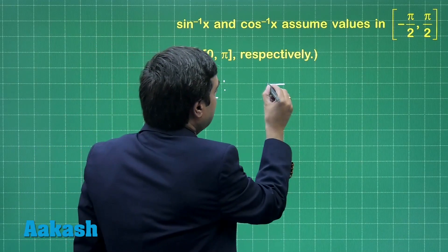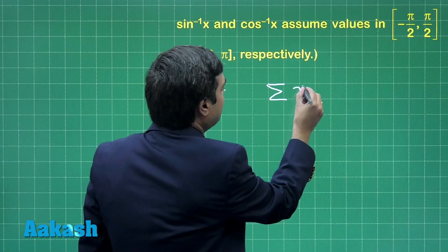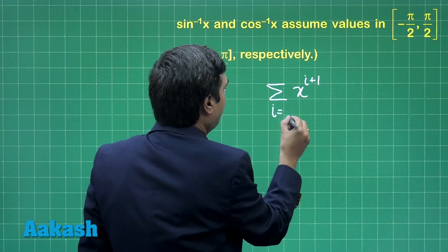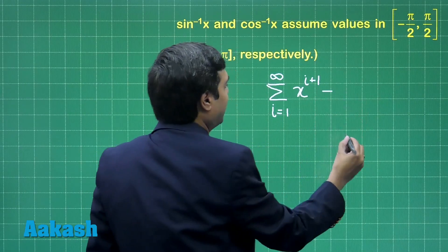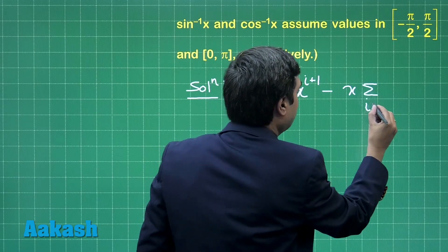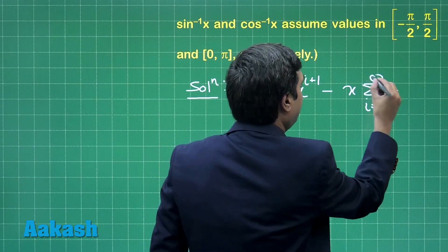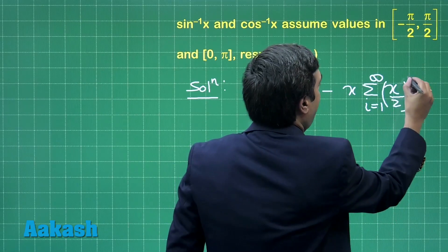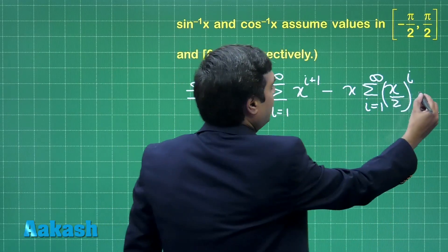Let us start this one. We have to equate summation x to the power i plus 1 where i is from 1 to infinity, minus summation i equals 1 to infinity x by 2 to the power i. This is equal to pi by 2.